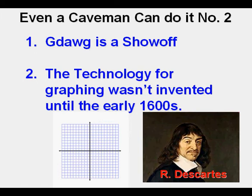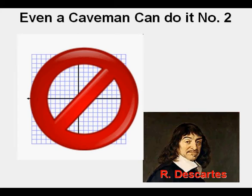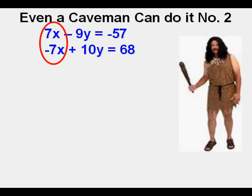So during this video, Aug will not even use graphing paper to solve systems of equations. The only post-1600s technology we will use is the calculator, and that will be for checking purposes only. We're going to start with this system of equations. 7x minus 9y equals negative 57, and negative 7x plus 10y equals 68. Will Aug be up to the challenge?